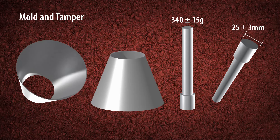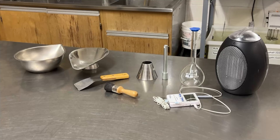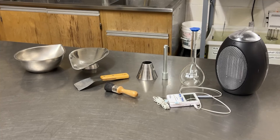The mold is in the shape of a cone. The inside diameter at the top shall be 40 plus or minus 3 millimeters, the inside diameter at the bottom shall be 90 plus or minus 3 millimeters, and the height will be 75 plus or minus 3 millimeters. We will also be using a space heater to provide a warm stream of air to assist in getting the sample to SSD condition.